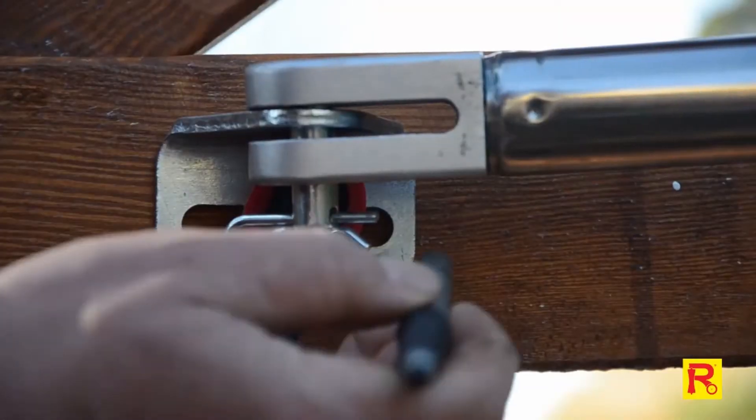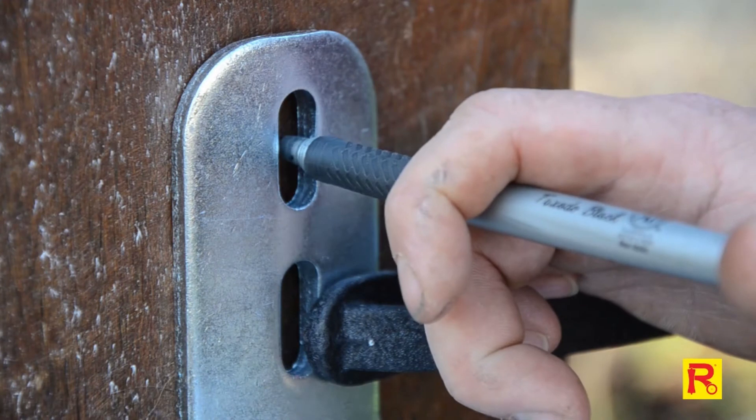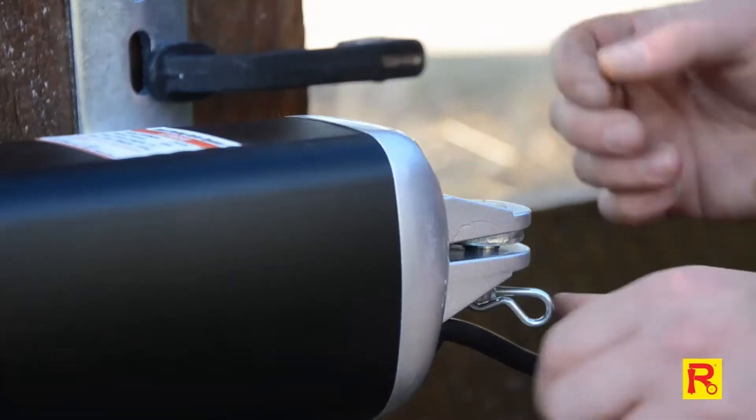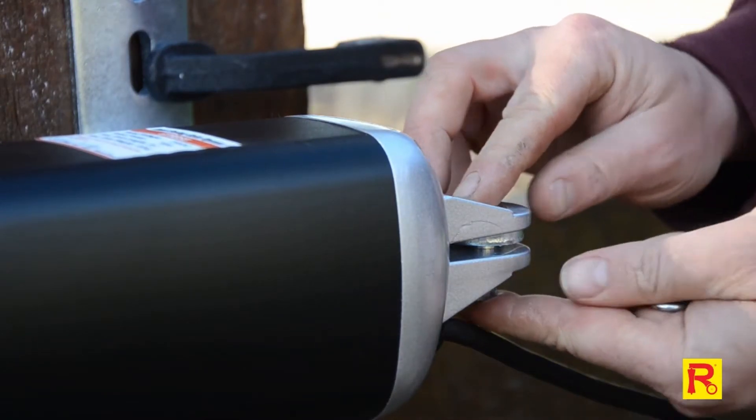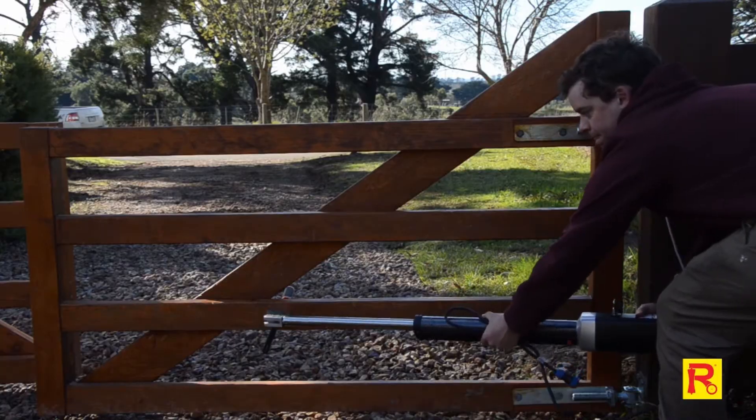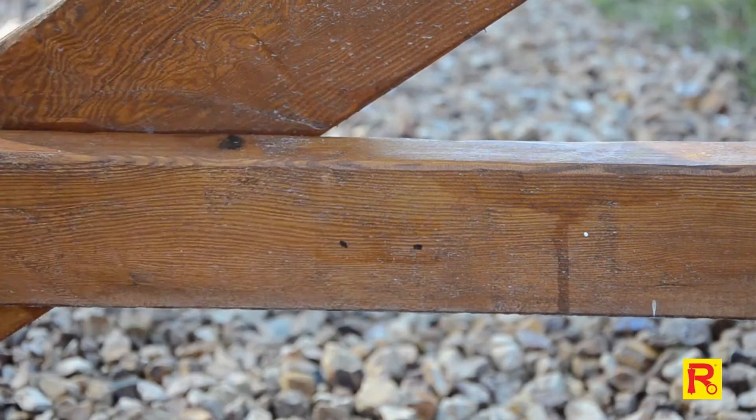Mark the middle of the bolt hole points for both the gate bracket and the post bracket. Take out the clevis pins and remove the gate opener arm from the brackets. Now, unclamp the brackets from the gate and the post.